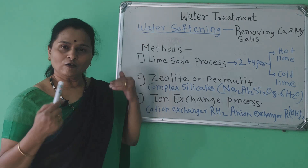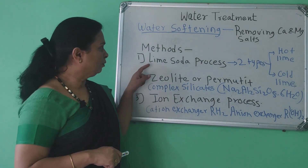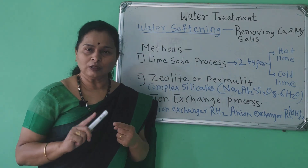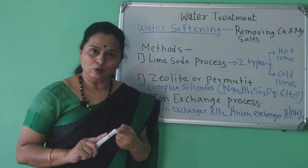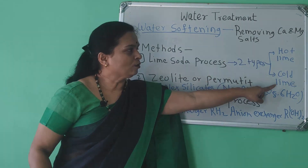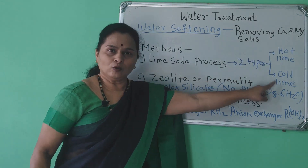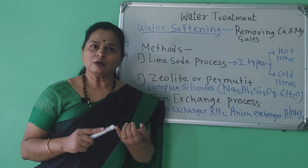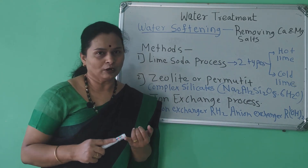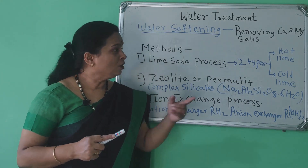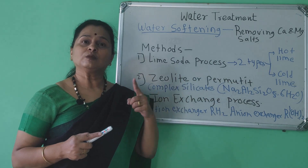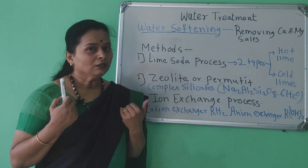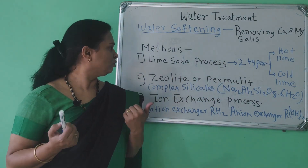The water softening methods are: the lime soda process, which includes the hot lime soda process and the cold lime soda process. Hot lime soda process uses hot water, while cold lime soda process uses cold or normal water.